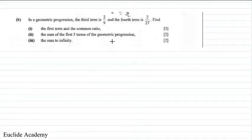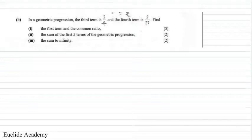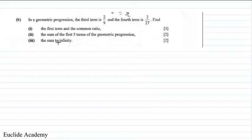We have a geometric progression question from the 2018 GCE Paper, if I'm not mistaken. It says: in a geometric progression, the third term is 2/9 and the fourth term is 2/27. Find: (1) the first term and the common ratio, (2) the sum of the first five terms, and (3) the sum to infinity.